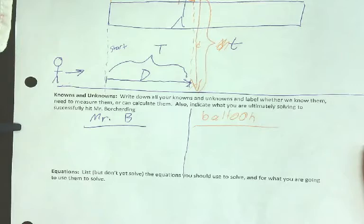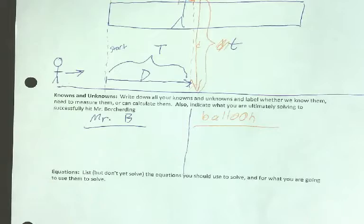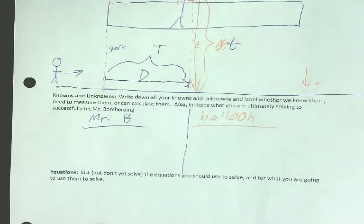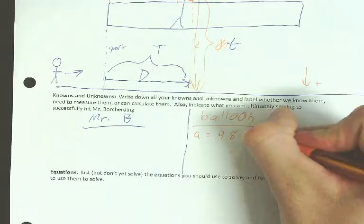You should be able to come up with at least three for each one, three knowns and unknowns for each one. Which does the balloon or me? The balloon, good. Let's go ahead and call down positive. So the acceleration of the balloon is 9.8 meters per second squared. Excellent.